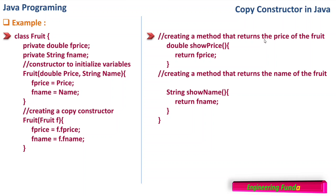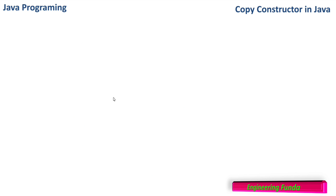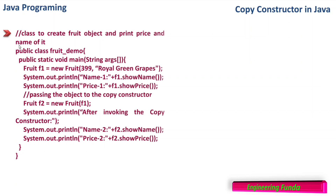We also create getter methods that return the values of the private fields. There is a double showPrice() method that returns fPrice, and a String showName() method that returns fName. Because these fields are private, we need these methods to fetch their values.